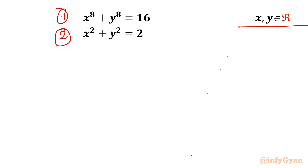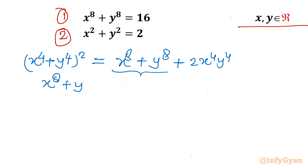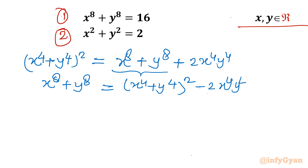I will consider two algebraic identities. Identity number 1: (x⁴ + y⁴)² expanded using the (a+b)² formula gives x⁸ + y⁸ + 2x⁴y⁴. So from here, x⁸ + y⁸ = (x⁴ + y⁴)² − 2x⁴y⁴.